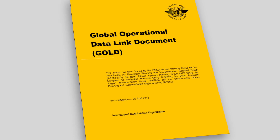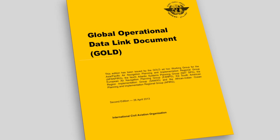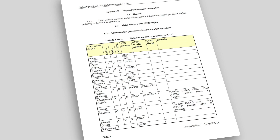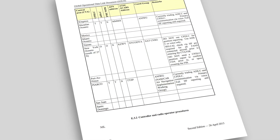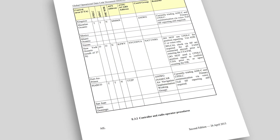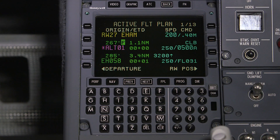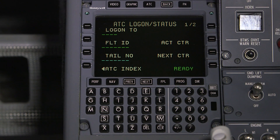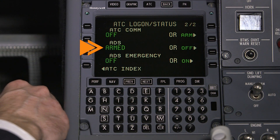Prior to logging on to an air traffic service center, pilots should check to see if ADSC services are available, and if so, ensure that ADS is armed in the logon page. To arm ADS, access ATC logon status page 2 and push line select key 3R to arm ADS.